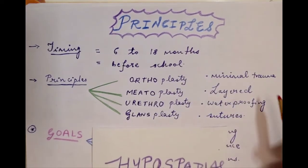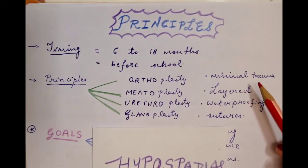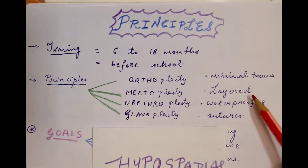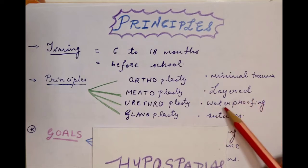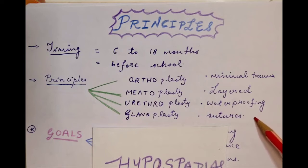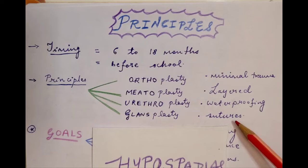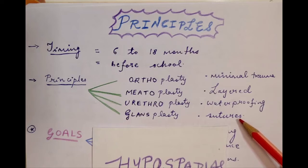For the principles you have to also remember that less is more — minimal trauma should be given to the tissues, which are very delicate and it is performed at a younger age. You have to do a layered repair, separating the skin from the urethra lining, and for this waterproofing must be done. An intervening layer should be present to separate the skin and the urethra and form a leak-proof closure. The sutures used have to be absorbable and minimally traumatic, not evoking greater reactions.